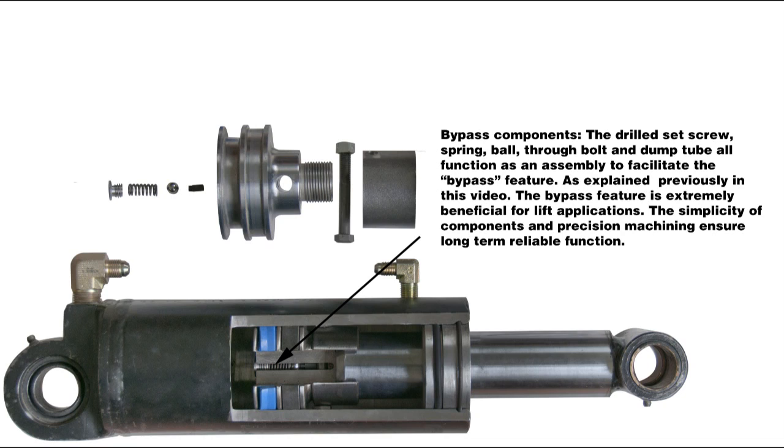Illustrated are the bypass components. The drilled set screw, spring, ball, through-bolt and dump tube all function as an assembly to facilitate the bypass feature. As explained previously in this video, the bypass feature is extremely beneficial for lift applications. The simplicity of components and precise machining ensures long-term reliable function.